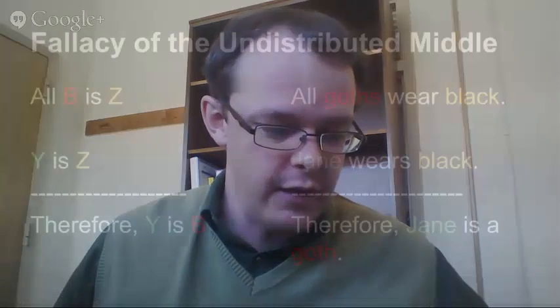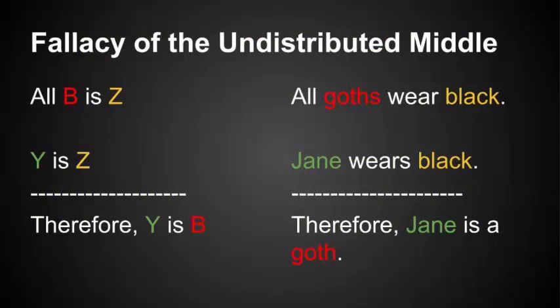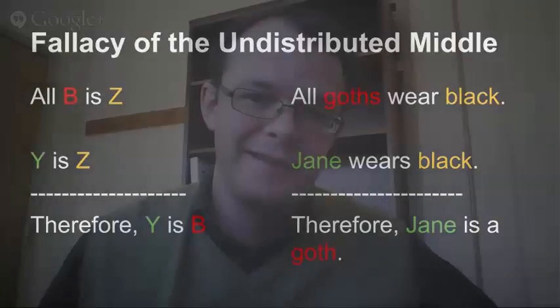The last fallacy I want to address — one that shows up all the time in discriminatory statements — is a really tricky one. It's called the fallacy of the undistributed middle. The formal structure is: all Bs are Z; Y is a Z; therefore Y is also a B. The way this looks in practice: all goths wear black; Jane wears black; therefore Jane must be a goth. You're taking the fact that she wears black and the idea that all goths wear black, and creating the statement that since she wears black she must be a goth. So what exactly is wrong with that type of statement?